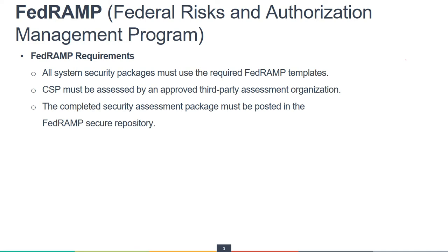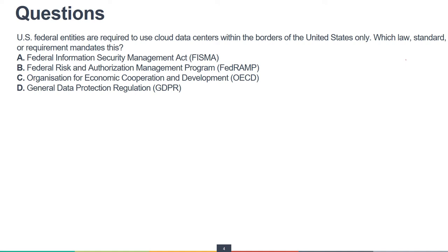Let's look at some questions related to FedRAMP. The first question is about data centers: U.S. federal entities are required to use cloud data centers within the borders of the United States only. Which law, standard, or requirement mandates this? Remember, this is not a law but a standard or requirement that mandates U.S. federal entities to use data centers within U.S. borders only.